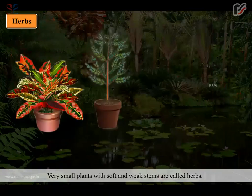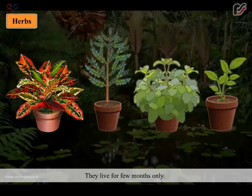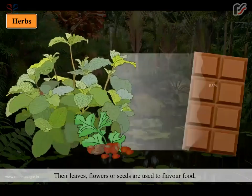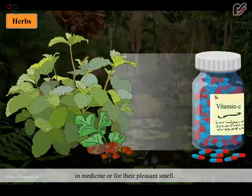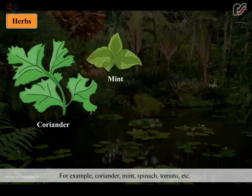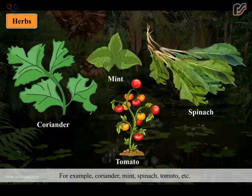Very small plants with soft and weak stems are called herbs. They live for only a few months. Their leaves, flowers or seeds are used to flavor food, in medicine, or for their pleasant smell. For example, coriander, mint, spinach, tomato, etc.